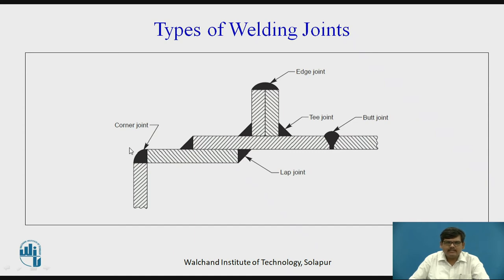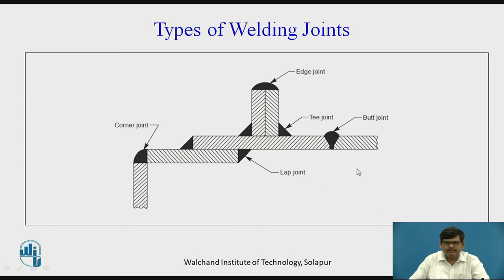The different types of weld joints we have seen are: corner joint, lap joint, T joint (when the plates are placed in a T fashion), edge joint (when the plates are placed exactly next to each other), and butt joint (when the plates are placed in front of each other). We prefer any one type of joint depending upon the application and requirement.